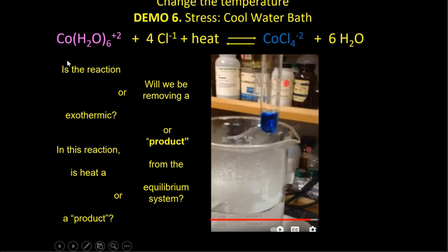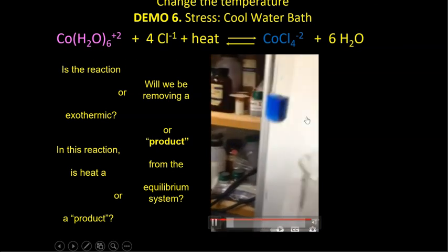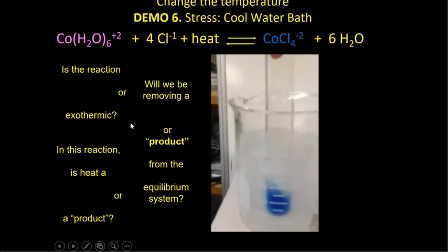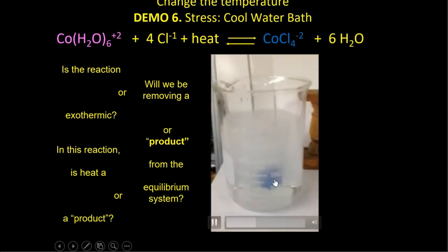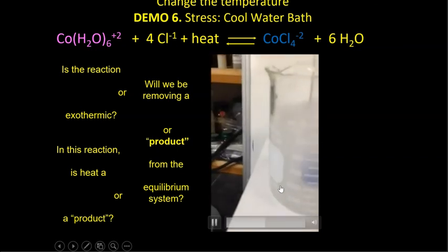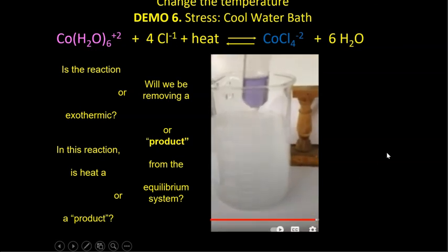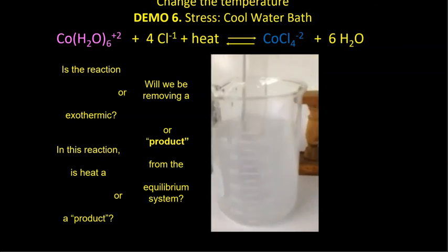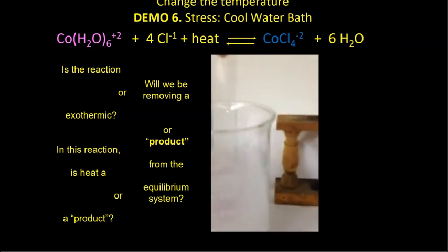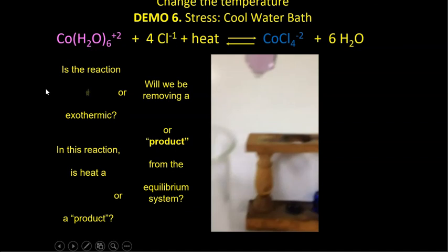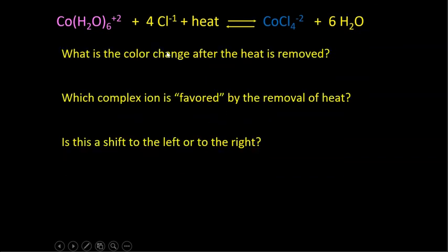For demonstration six, we place the tube in a cool ice bath. As we cool it down, the blue solution gradually turns pink. The reaction is still endothermic, so heat is still considered a reactant — but now we are removing that reactant. Removing a reactant causes the system to make more reactants, producing more of the pink cobalt hexahydrate ion. This is a shift to the left.